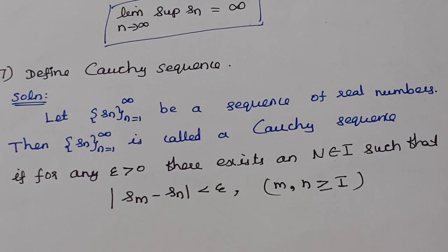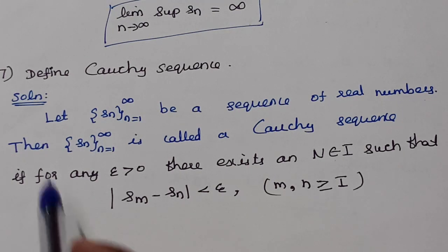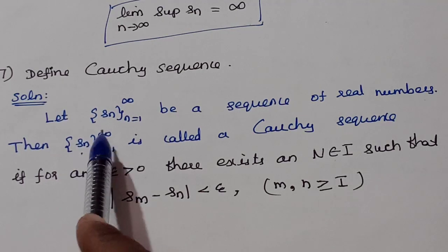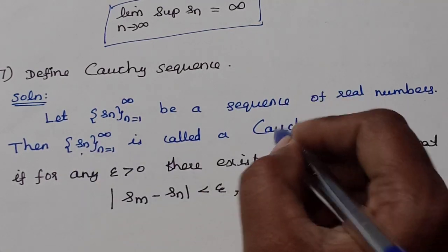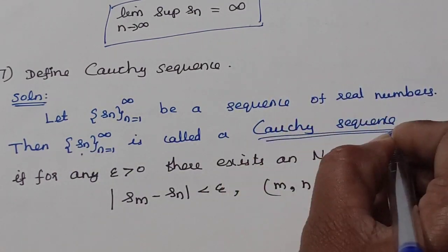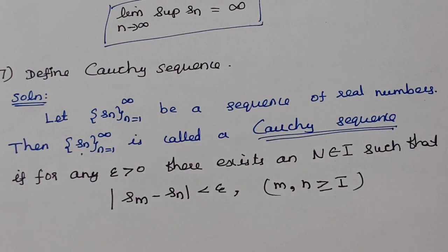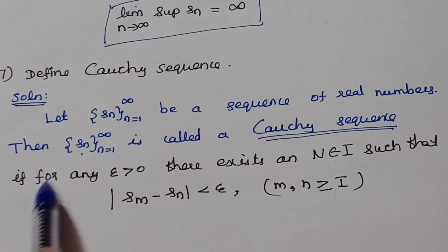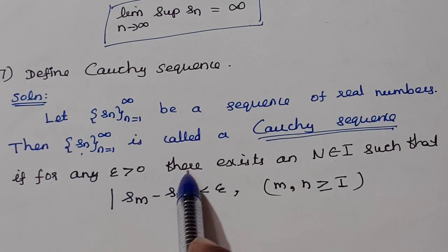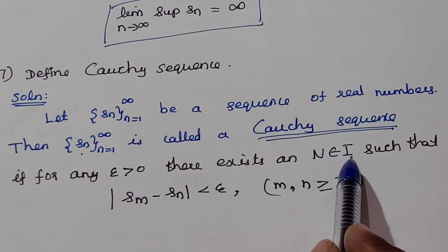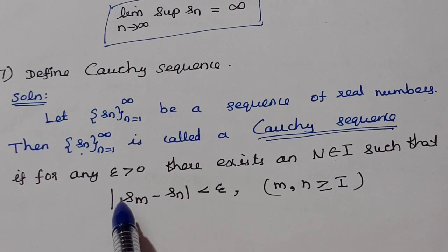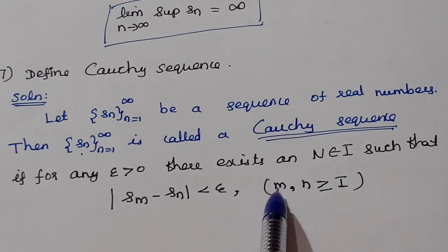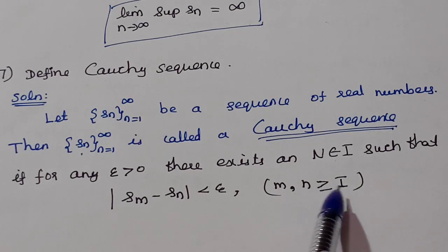Define a Cauchy sequence. Let (Sₙ) be a sequence of real numbers. Then (Sₙ) is called a Cauchy sequence if for any ε > 0, there exists N ∈ ℕ such that |Sₘ − Sₙ| < ε for all m, n ≥ N.